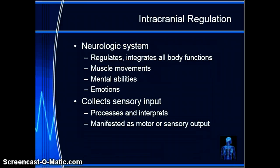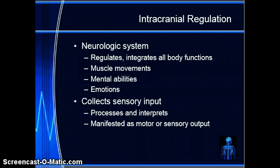With normal intracranial regulation, our neurologic system regulates all body functions. The neurologic system collects sensory input and information from external and internal environments, processes that information, and then our body decides what we should do. The nervous system is responsible for cognitive control and both voluntary and involuntary activities. Any threat to any aspect of neurological functioning is going to be a threat to that entire person.